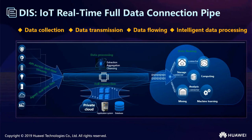Let's see the architecture of the Data Ingestion Service. DIS mainly has four parts: data collection, data transmission, data flow processing, and intelligent data processing. It can collect all data from IoT in real time; APIs and agents are available for the systems. In the data flow process, data is extracted, cleaned, and gathered. Then the data can be used in many ways, such as storage, analysis, calculation, mining, and deep learning.